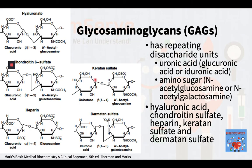The glycosaminoglycans are made up of repeating disaccharide units, each of which consists of one uronic acid — like glucuronic acid or iduronic acid — and one amino sugar, specifically N-acetylglucosamine or N-acetylgalactosamine. Many of these amino sugars are also esterified with sulfuric acid, or sulfated, further increasing their polarity. Examples of glycosaminoglycans are hyaluronic acid, chondroitin sulfate, heparin, keratan sulfate, and dermatan sulfate.